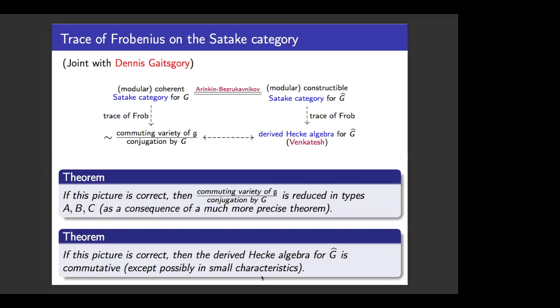Where does the reducedness come from on the other side? Actually, for the commuting variety modulo conjugation, there's a much better way to state the conjecture: the variety for G mod conjugation is isomorphic to the variety for a parabolic subgroup. For the parabolic subgroup it's commutative to begin with, so it's kind of obvious that the commuting variety is reduced. Has the conjecture been checked by computer for small cases? This statement, I think, has been checked for type A, but I'm not sure to what extent it has been verified.